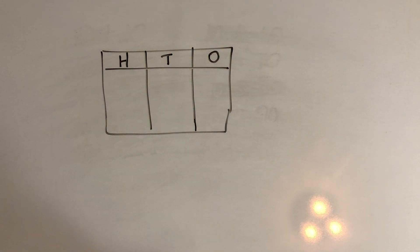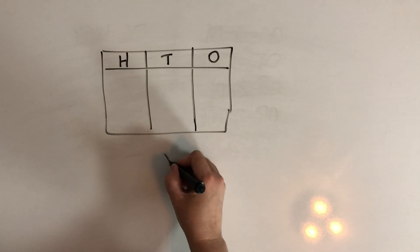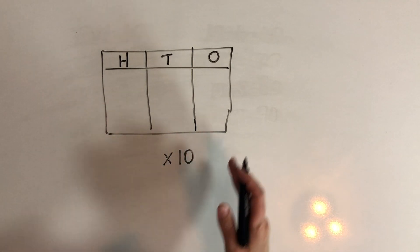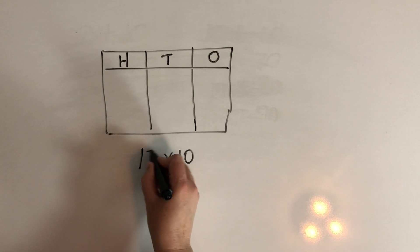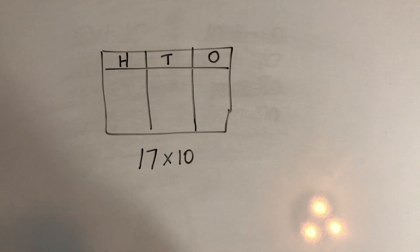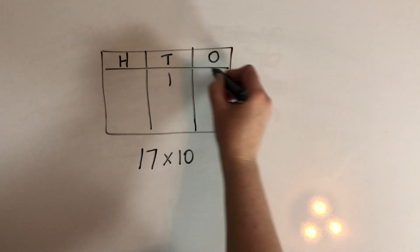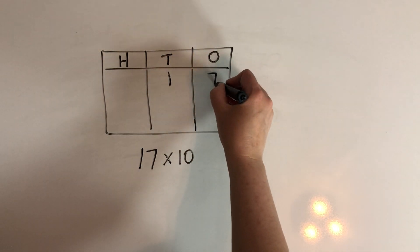Okay, so we know that when we multiply a number by 10, we shift the digits one place to the left. So how might this look if I multiplied 17 times 10? So let's start with 17 in our place value chart. That's 1 ten and 7 ones.